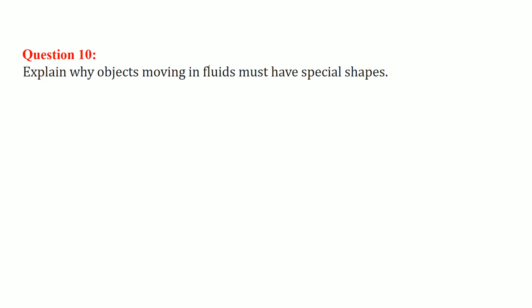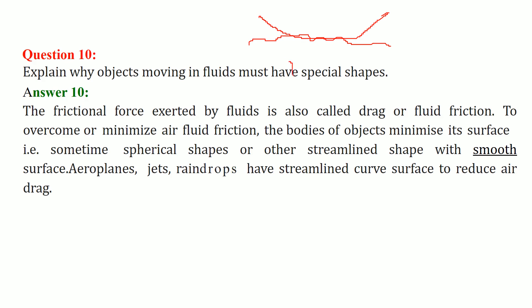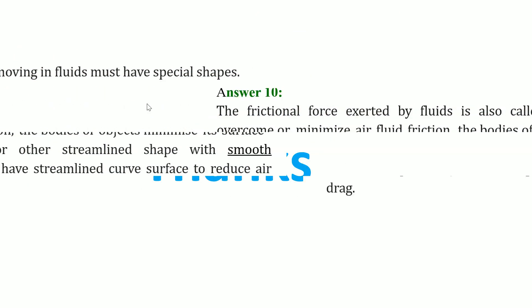Explain why objects moving in fluids must have special shapes. The friction force exerted by a fluid is called drag or fluid friction. To minimize fluid friction, objects minimize their surface area. Water droplets become round or spherical due to this. Objects use streamlined shapes with smooth surfaces — aeroplanes and jets are of that shape just to drag through the air and reduce friction as much as possible. This is all about the question and answer on friction. Thank you so much and take care.